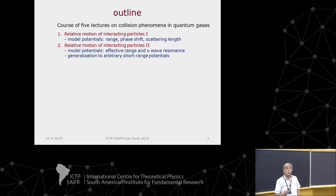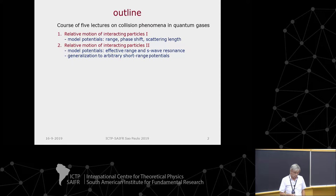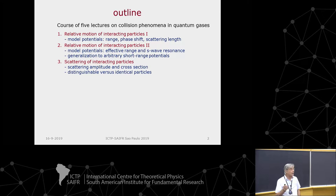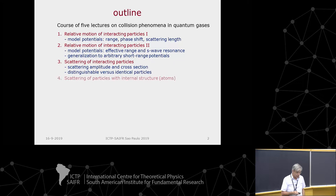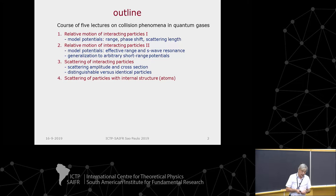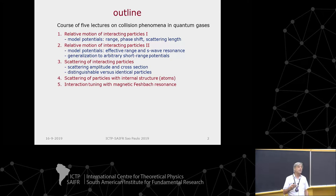I'll show that what we learned with model potentials can be generalized to arbitrary short-range potentials. Then I'll apply what we learned about relative motion to scattering — introducing the scattering amplitude and cross-section, differential and total cross-section, and the effect of whether we have distinguishable or indistinguishable particles, bosons and fermions. Then we put internal structure on the atom and meet the scattering of particles with internal structure. Once we know that, we find that we've got control over the interaction, leading up to the phenomenon of the Feshbach resonance — one of the marvels of our field.